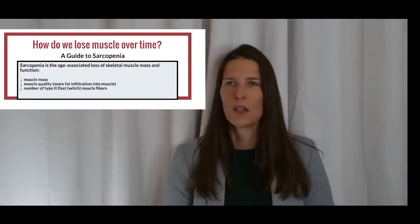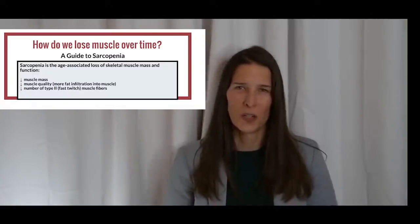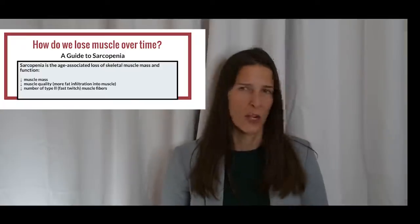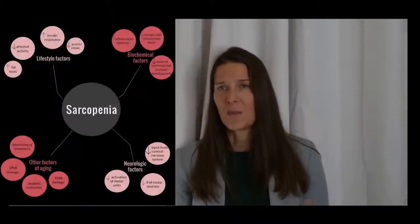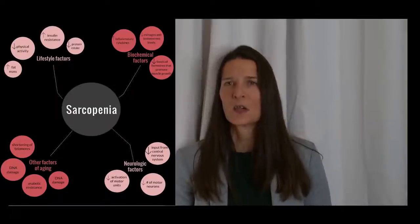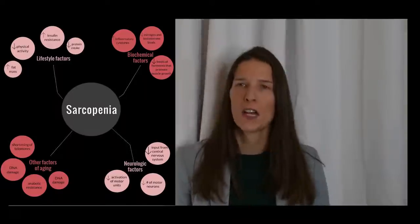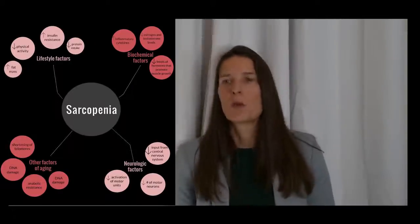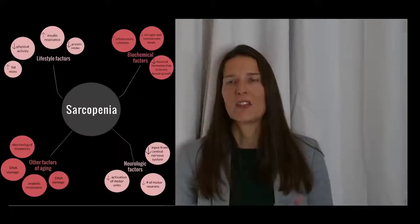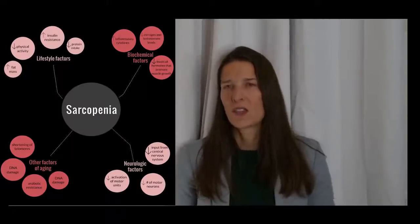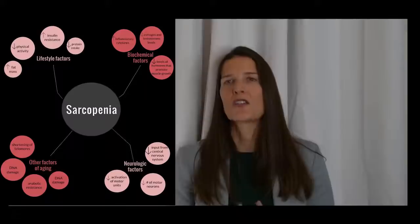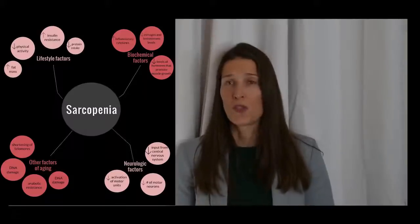So why does sarcopenia occur? As we get older, the rate of muscle breakdown begins to exceed the rate of muscle formation. There are many reasons why this occurs. Aging is associated with decreased levels of certain hormones, such as growth hormone and insulin-like growth factor 1, which are needed to make new muscle. Testosterone levels drop, which also leads to lower muscle mass and bone strength.